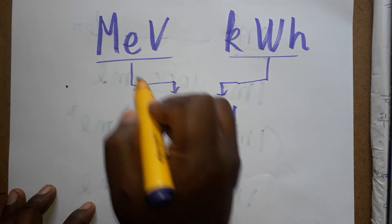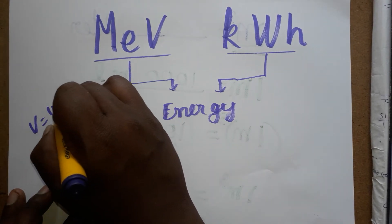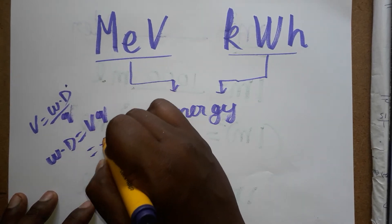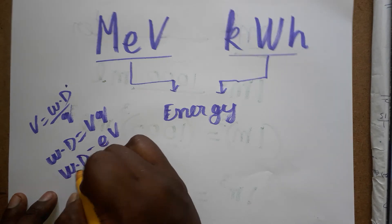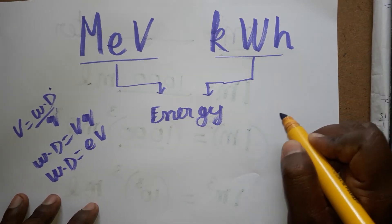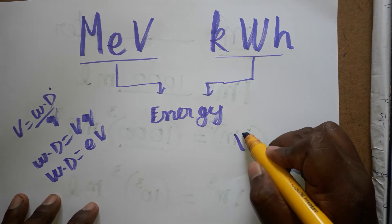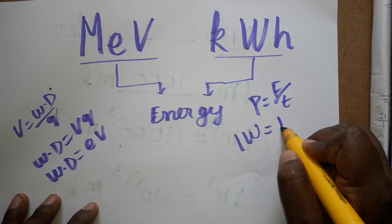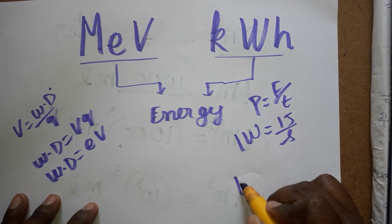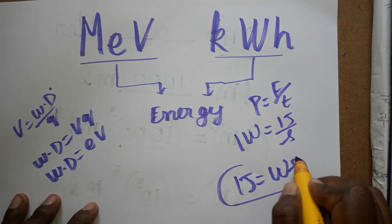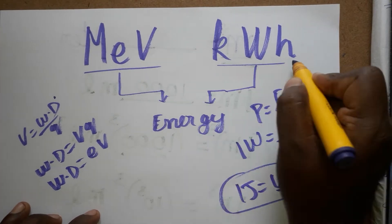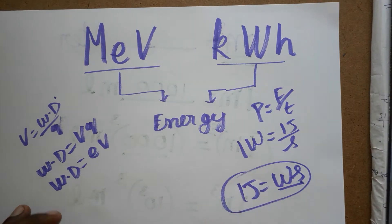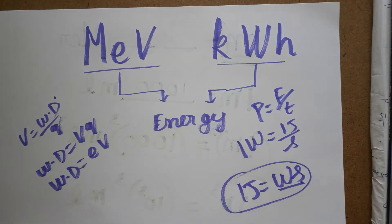MeV becomes a unit of energy because voltage equals work done per charge, so work done equals voltage into charge — that is why electron volt is a unit of energy. On the other hand, kWh also represents energy because power equals energy divided by time, so one watt equals one joule per second, meaning one joule equals watt into second. So kWh is watt into hour, and both represent energy.